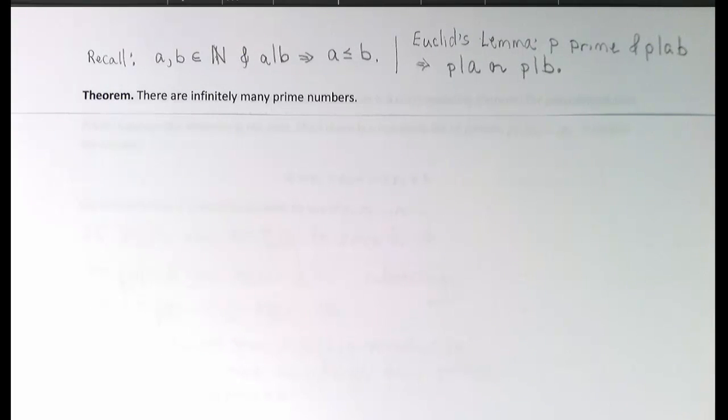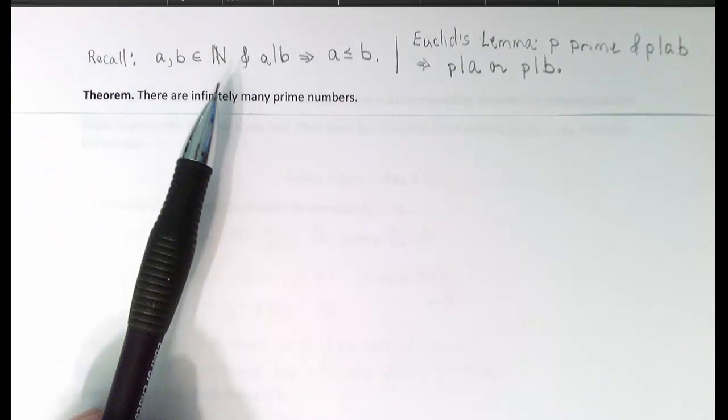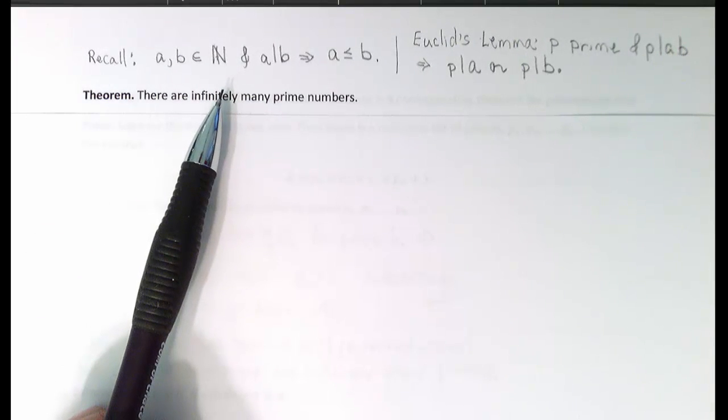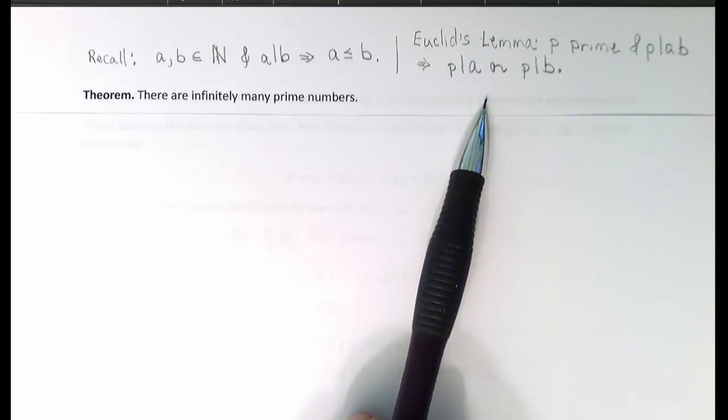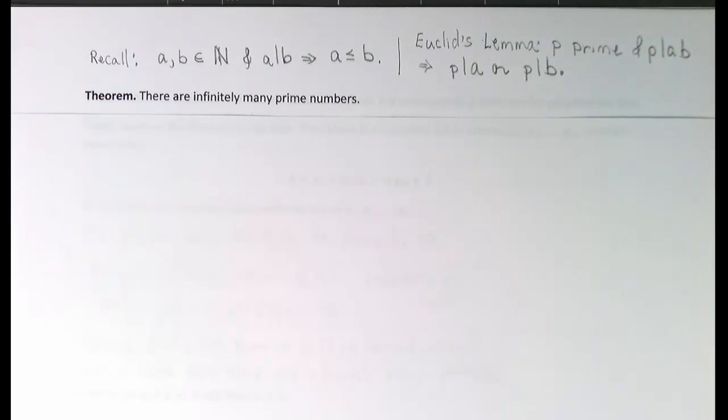Let's turn then to some basic results concerning the factorization of natural numbers into primes. Here, we're considering natural numbers rather than all integers because there's no advantage to considering the possibilities of factoring negative integers. Recall that we've shown in previous lessons that if a and b are natural numbers and a divides b, then a must be less than or equal to b. We also have Euclid's Lemma: If p is a prime and p divides the product of natural numbers a times b, then either p divides a or p divides b. We'll be using both of these in the sequence. First, let's show that there must be infinitely many prime numbers. This turns out to be a surprisingly easy theorem to prove.